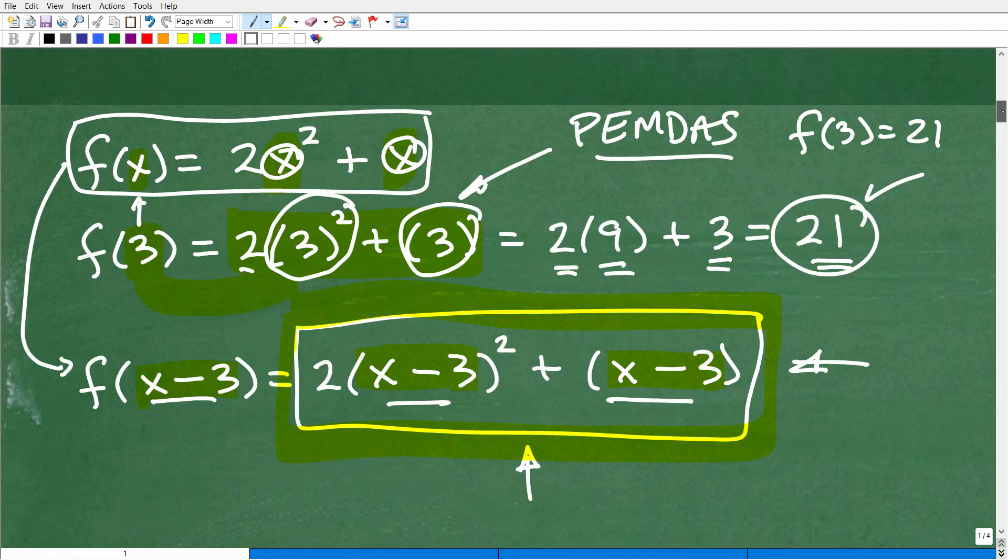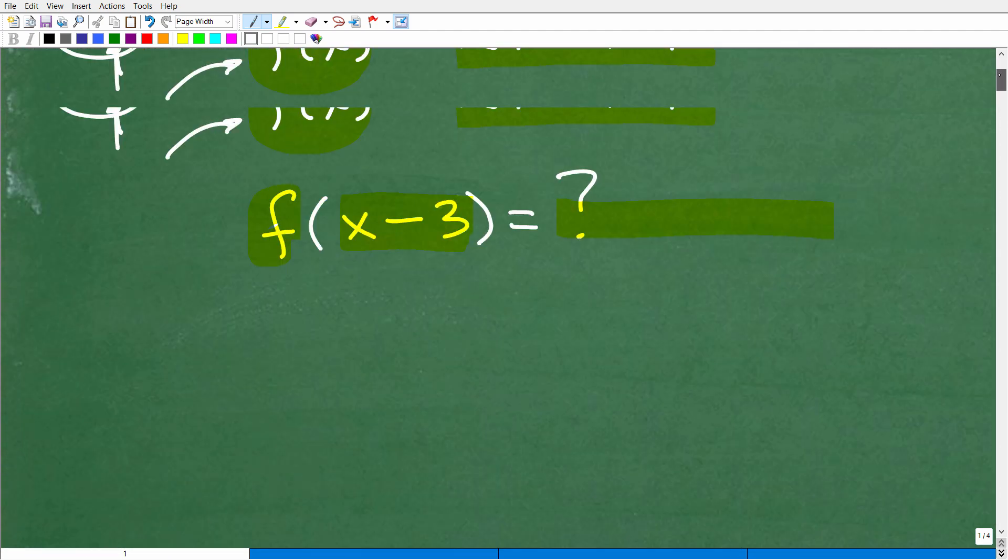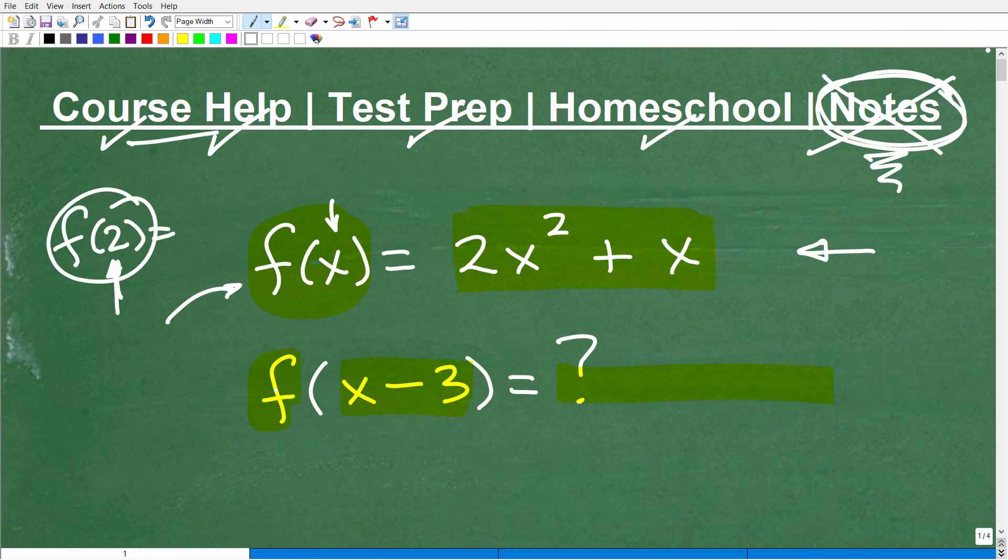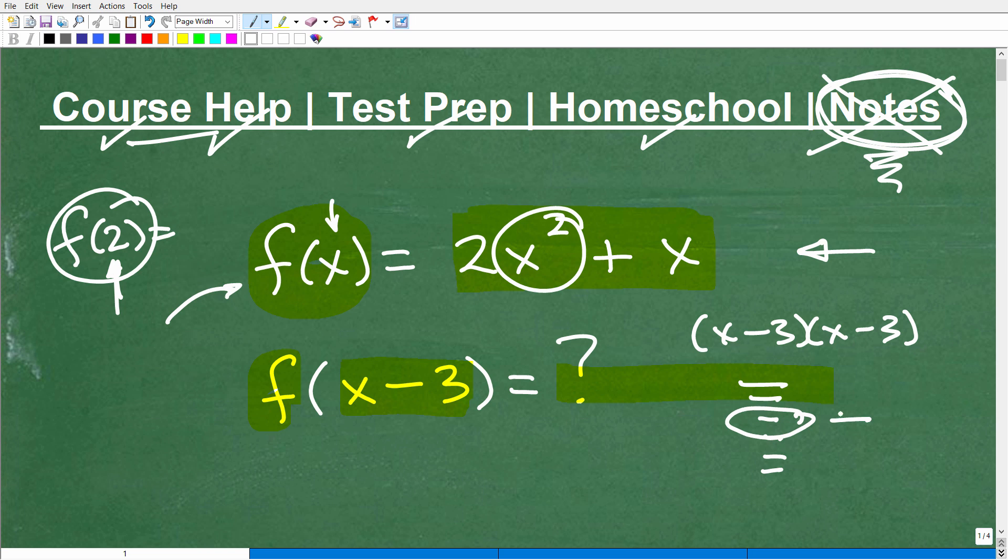Now, if you didn't understand this, hopefully this video helped you out to give you a bigger picture of evaluating functions. It's absolutely something you need to understand. But if you're having trouble with this, take it one skill at a time. What is it that you don't understand? Do you not understand how to multiply things like x minus 3 times x minus 3, like the FOIL method? Then review that. If you're still not comfortable with just the concept of functions, then review functions.